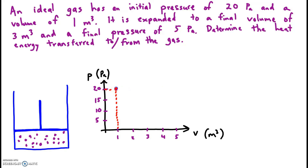The data point showing the initial condition or state of the gas is that it's expanded to a final volume of 3, so we increase the volume here to 3 on the x-axis, and a final pressure of just 5. There it is. That's the final state of the gas.